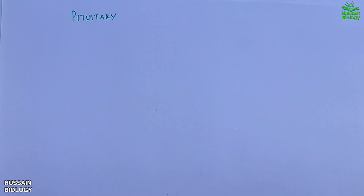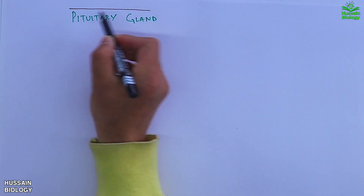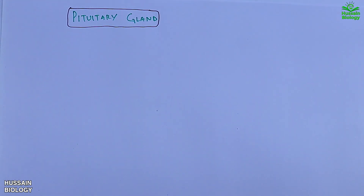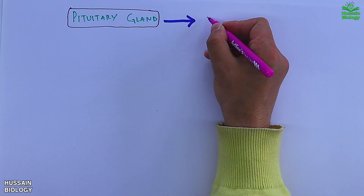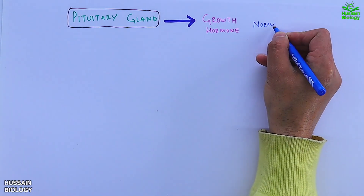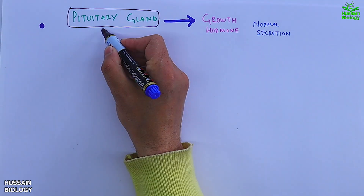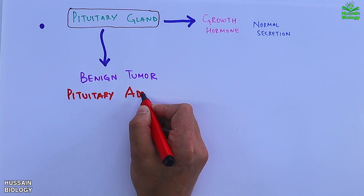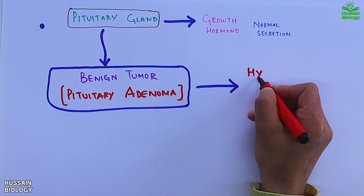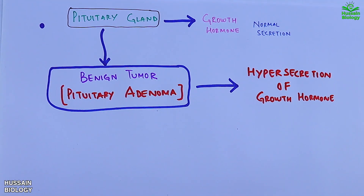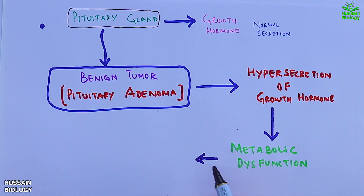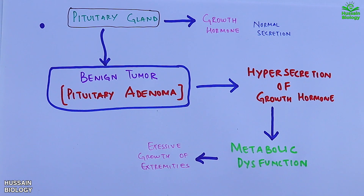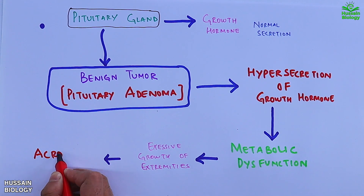It all arises from the pituitary gland, because we get the growth hormone from this gland. Under normal conditions the growth hormone is secreted normally. But when the pituitary gland has a benign tumor — that is pituitary adenoma — we get hypersecretion of growth hormone, and this hypersecretion leads to metabolic dysfunction, which in turn leads to excessive growth of extremities, termed as acromegaly.